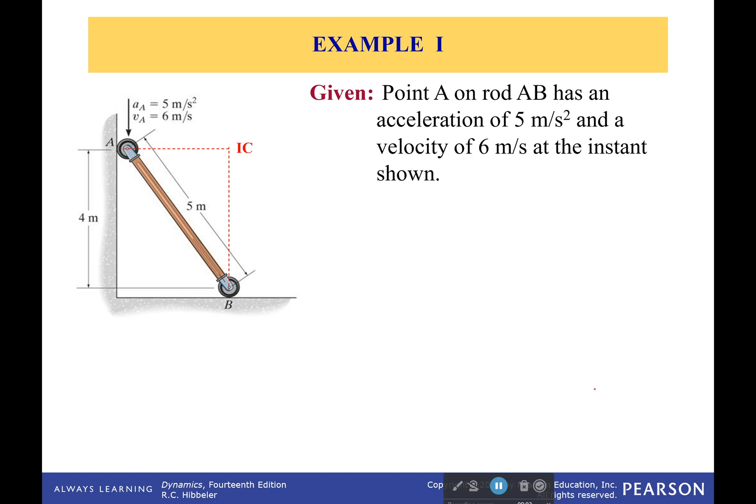Okay, now let's look at this. So we have a very strange ladder that's leaning against the wall. We know the acceleration of point A and the velocity of point A at this moment. But now we want to find the angular acceleration of the rod and the acceleration of point B at this instant.